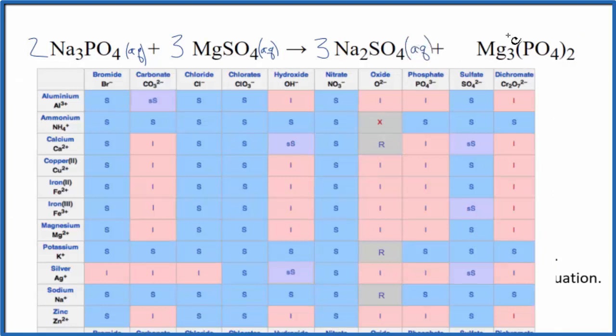This will be aqueous dissolved in water. We said sodium compounds are soluble, aqueous. And then magnesium phosphate. Here's our magnesium again and phosphate. So we go down and over, and we see that I. That means magnesium phosphate is insoluble in water. It won't dissolve, so it's going to be a solid.